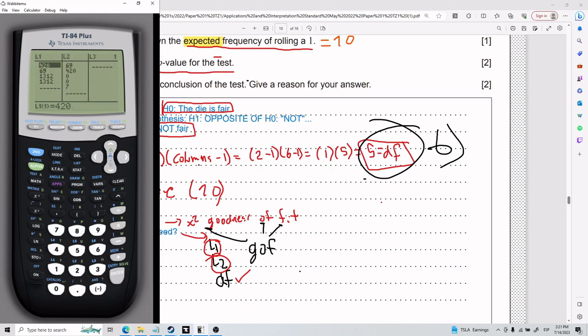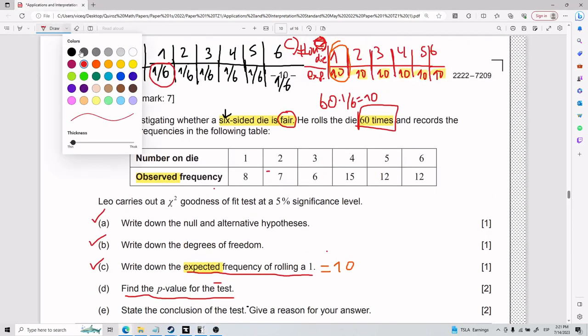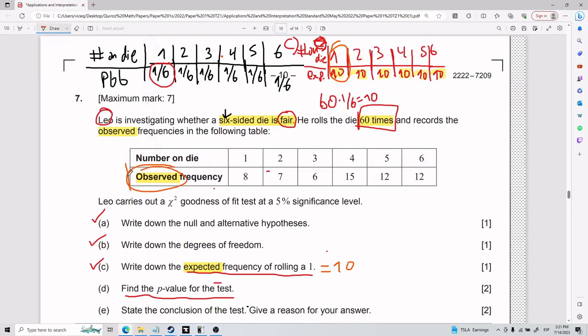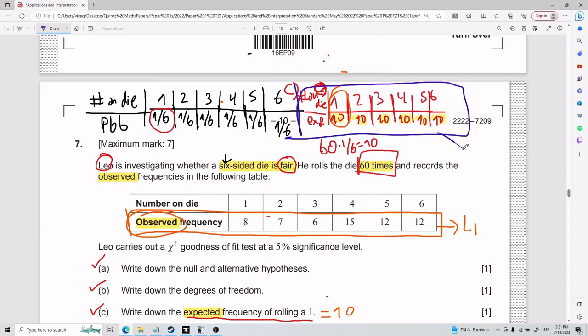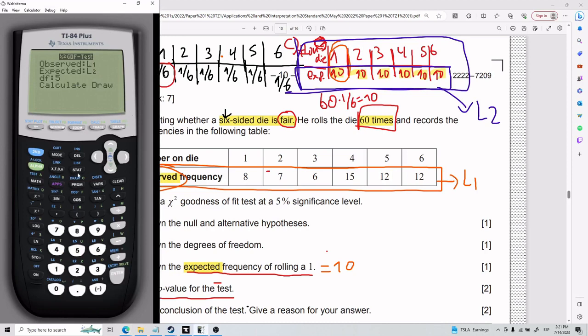Now I need L1 and L2. How do I find L1 and L2? Go to stat and edit. This is the kind of thing you have to memorize. You go to stat and edit. Here are my lists. L1 and L2 are up here. One of them is observed, the other one is expected. We go back because our memory is fragile. L1 is observed. L2 is expected. Here is my observed list. So this is going to be L1. And up here from part C is my expected one. And that is going to be my expected list. The one on the bottom, the one that is a bunch of tens.